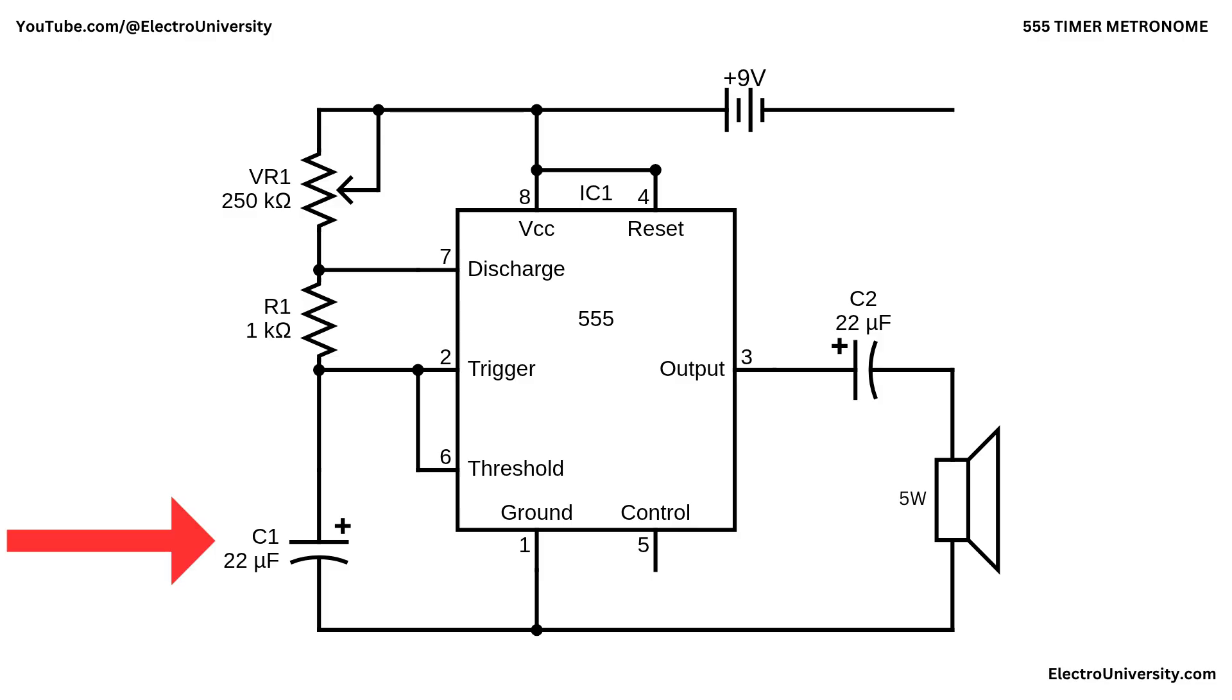When C1's voltage reaches about 2 thirds VCC, the 555 flips. The output goes low and pin 7 turns on, dumping charge from C1 through R1 until the voltage falls below about 1 third VCC. That immediately flips the output high again, and the cycle repeats.